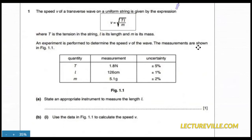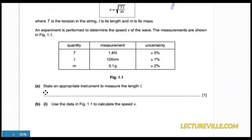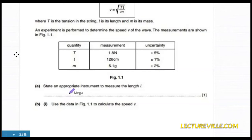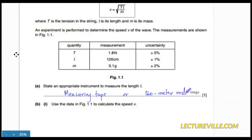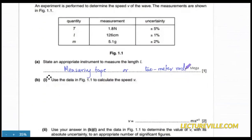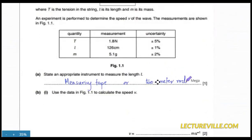An experiment is performed to determine the speed v. The measurements are shown. Now, what instrument should be used to measure 126 centimeters? You would use a measuring tape or a two-meter rule if available in the lab, because a standard meter rule is only 100 centimeters and 126 centimeters exceeds that.